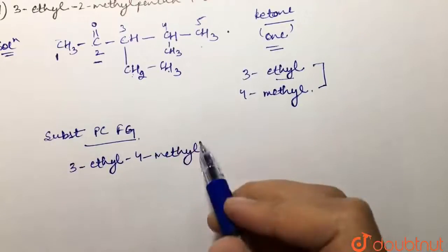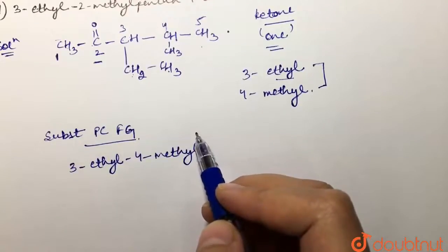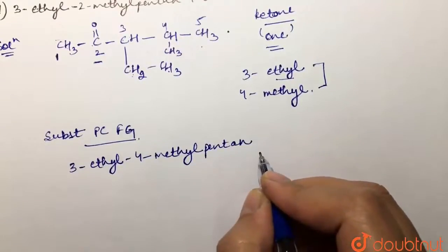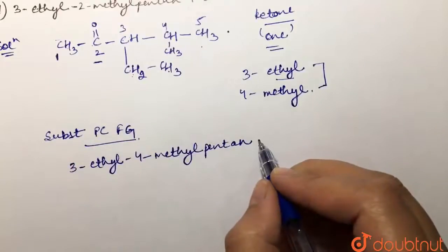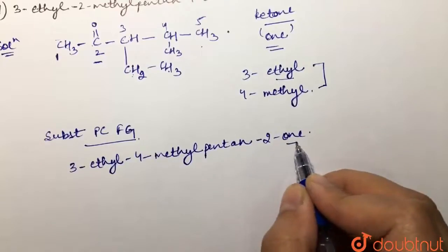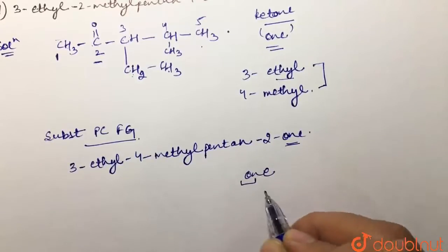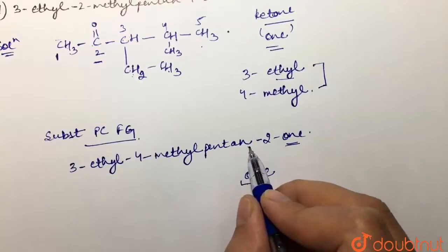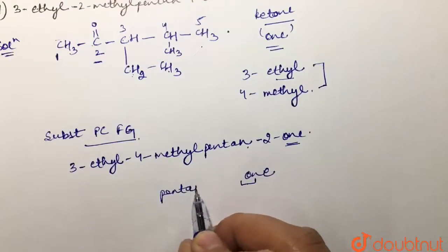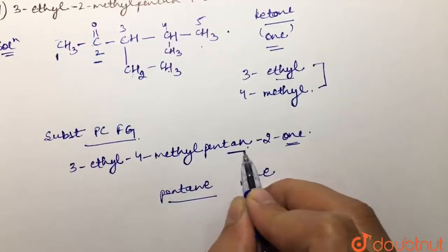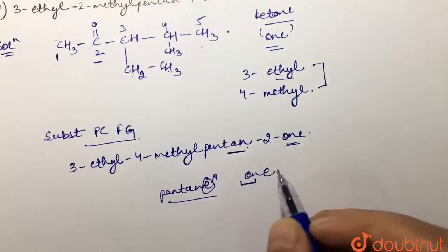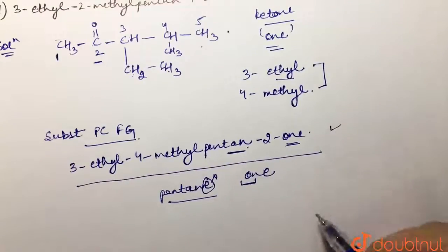Alphabetically, ethyl comes before methyl, so we write 3-ethyl first, then 4-methyl. Our parent chain has five carbon atoms, so we use 'pentane'. The ketonic group is at position 2, giving us '-2-one'. Because '-one' starts with a vowel, we drop the final 'e' from 'pentane', giving us 'pentan-2-one'. So the full name is 3-ethyl-4-methylpentan-2-one.